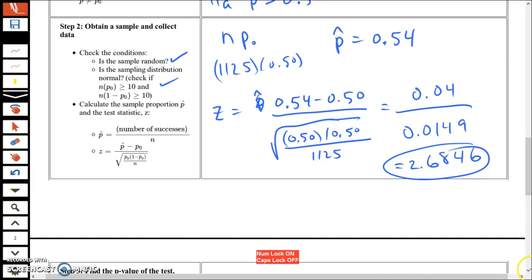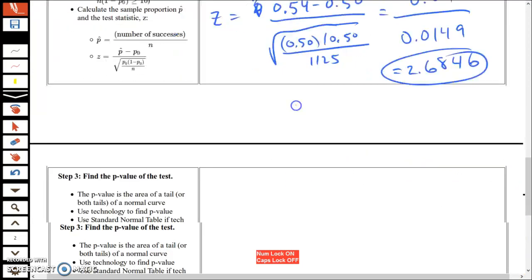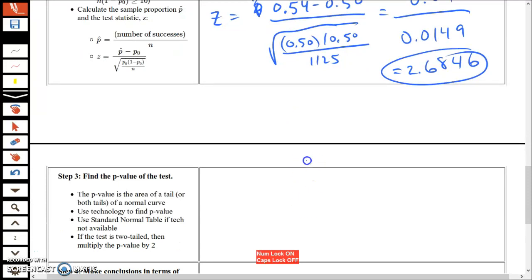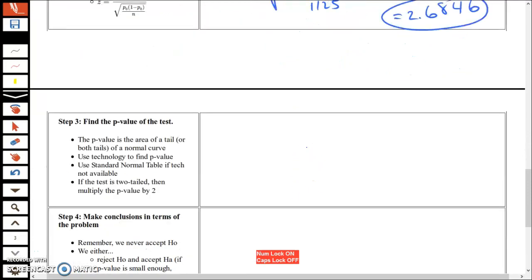Let's continue. Step 3, the p-value. There's a few different ways to get the p-value.